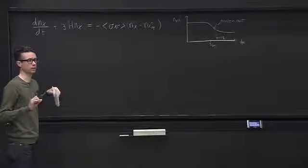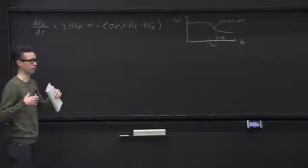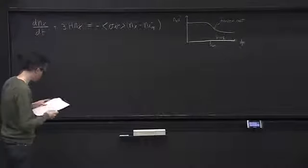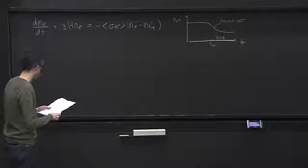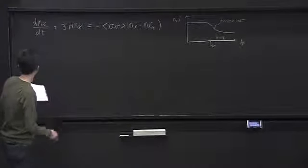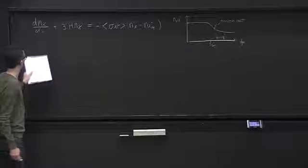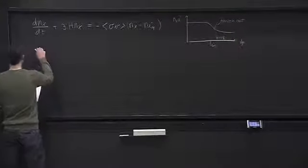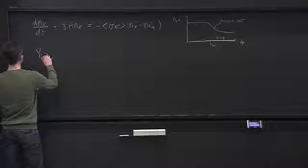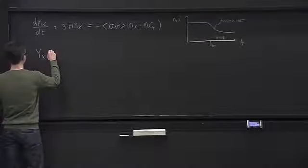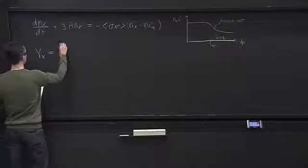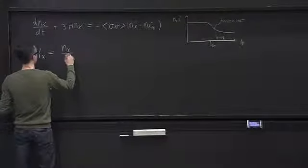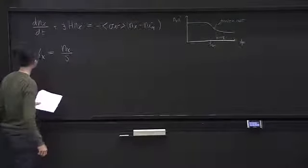In practice, people sit down and compute this numerically, but it's handy to think about how one might approximate this. Along the way, we'll derive a couple of useful approximate formulas — handy rules of thumb to get quick estimates. If you start with a theory, what's the dark matter density that it predicts?